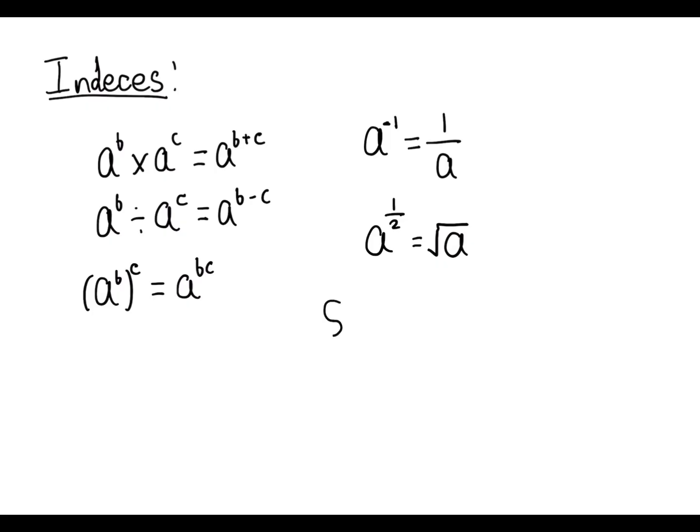So we take the second root of A for this example. So if we had something like eight to the power of a third, it would be the third root of eight, which is just two as two multiplied by itself three times is going to give eight. However, what if we had something like 64 to the power of minus a half?